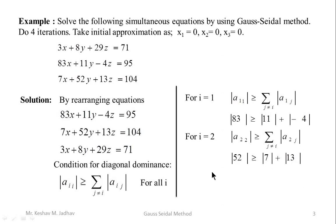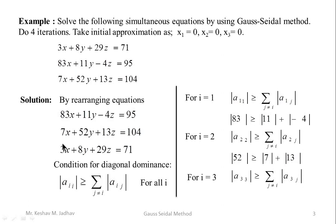The condition for diagonal dominance is satisfied. For i = 3, a33 is 29, and 29 should be ≥ 3 + 8 = 11 — this condition is also satisfied. So with the rearranged equations, the condition for diagonal dominance is fully satisfied.